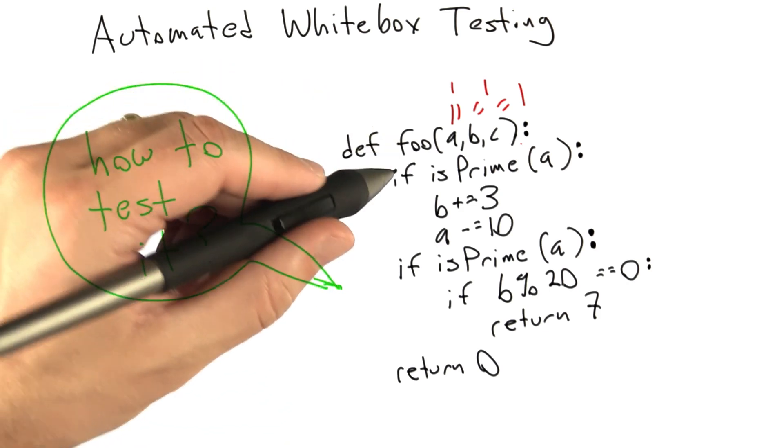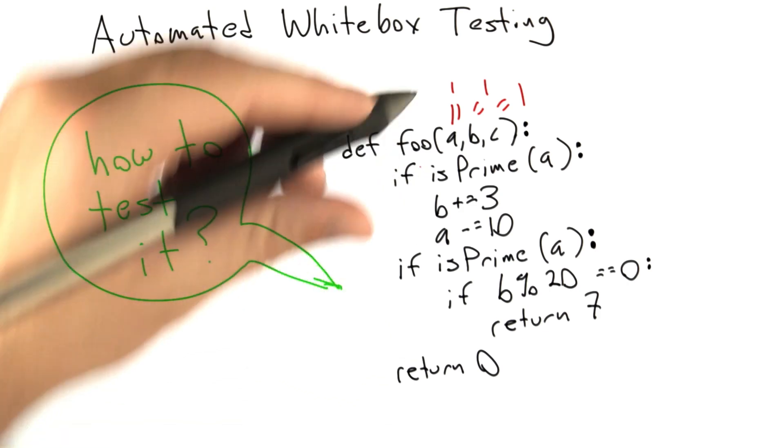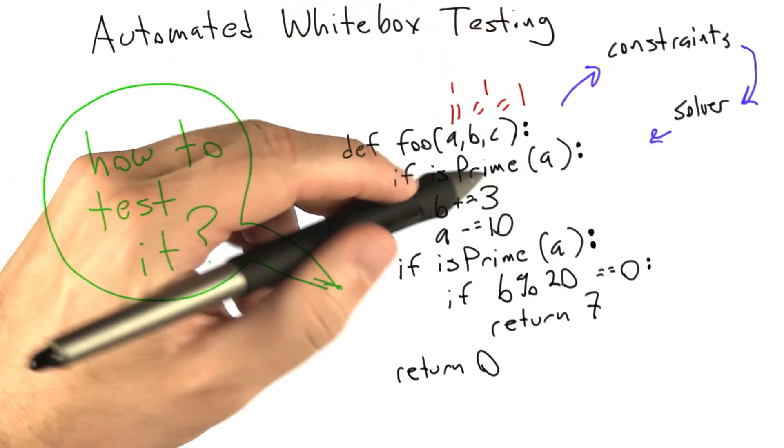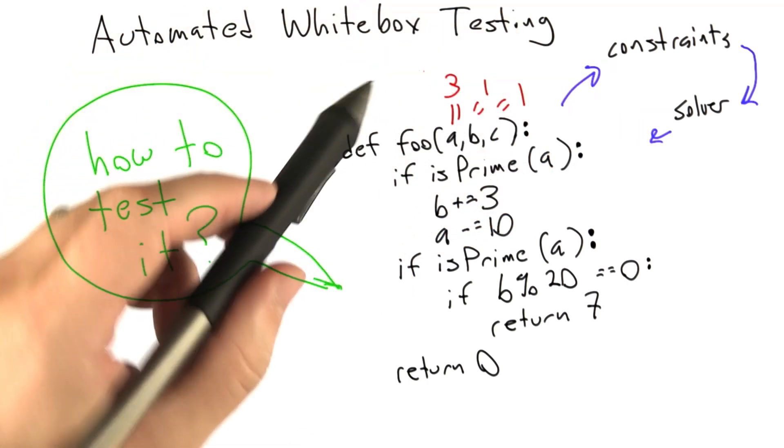It's going to end up with a set of constraints on the value of A, which are passed to a constraint solving tool. And the answer, if the solver succeeds, is going to be a new value of A that passes the primality test. Let's say A is 3.